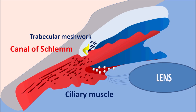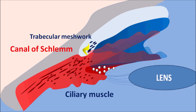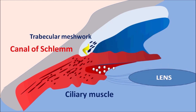Sometimes the drainage pathway becomes blocked, producing narrow-angle glaucoma. In open-angle glaucoma, however, the lens is normal and the iris is not blocking the pathway, but there is still a block in the trabecular meshwork, resulting in decreased drainage of aqueous humor.